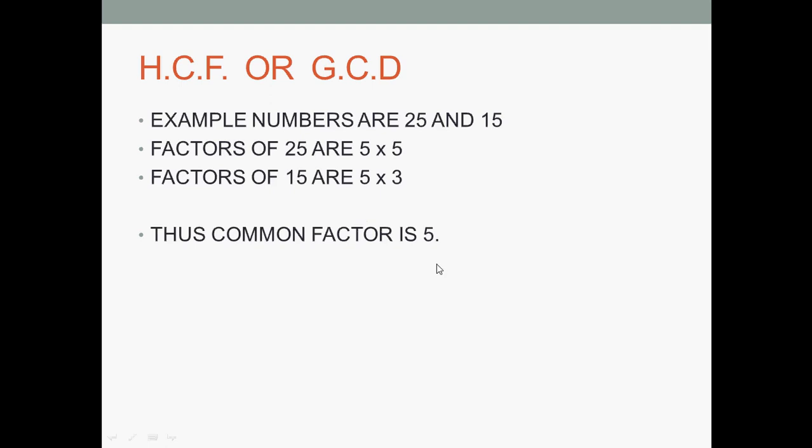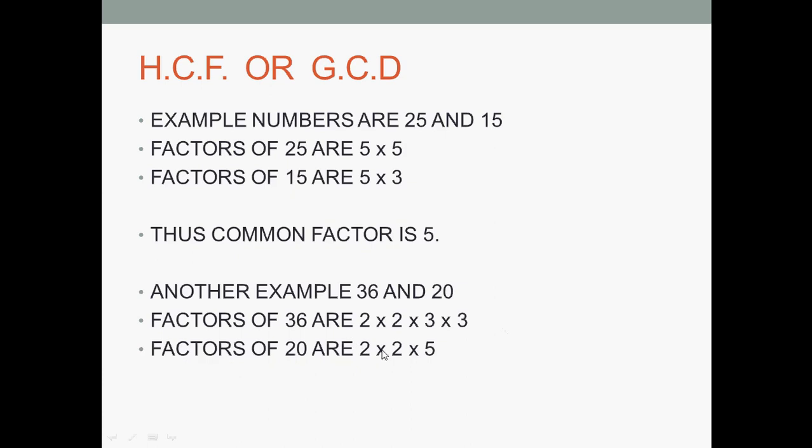Let me show you another example. I have 36 and 20. 36 factors are 4 into 9, which we write as small factors as much as possible: 2 into 2 into 3 into 3. And 20 is 2 into 2 into 5. The common factors are 2 into 2, that means 4. So the highest common factor is 4. This is one method.